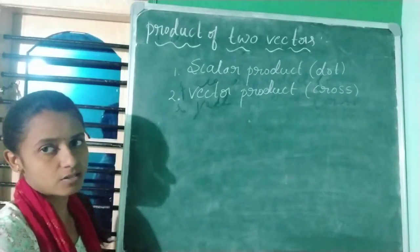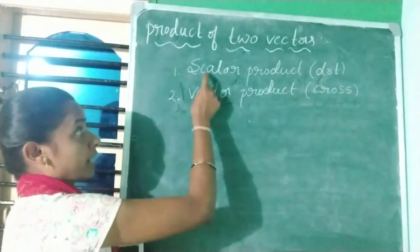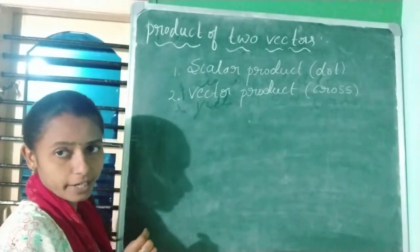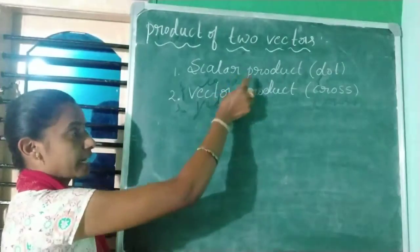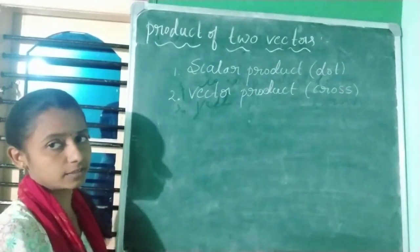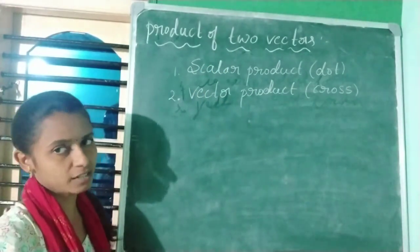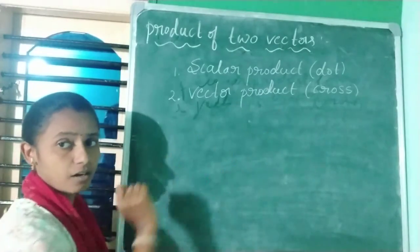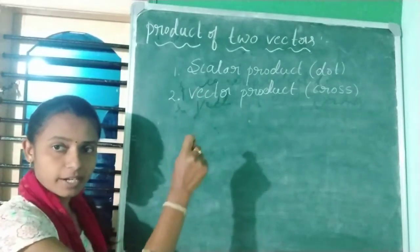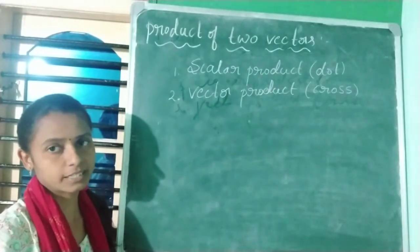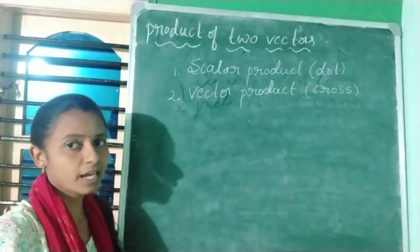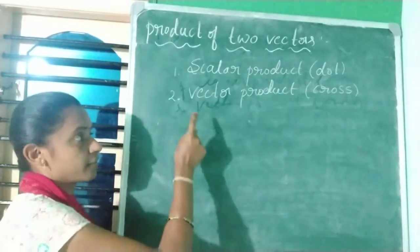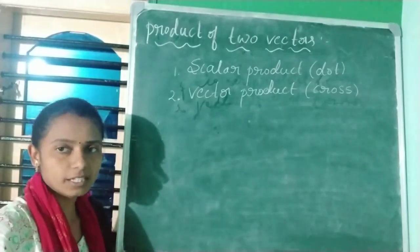The scalar product is also called the dot product. The resultant of the scalar product is a scalar itself — a real value. The vector product is called the cross product, and the resultant of the vector product is again a vector itself. A vector has i, j, k components, while a scalar is just a real number.